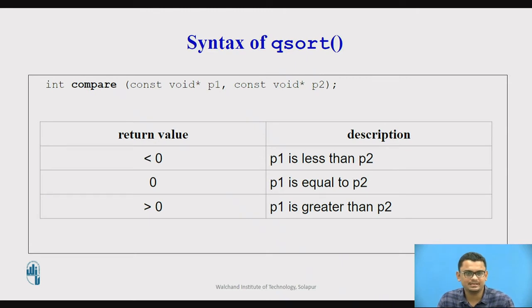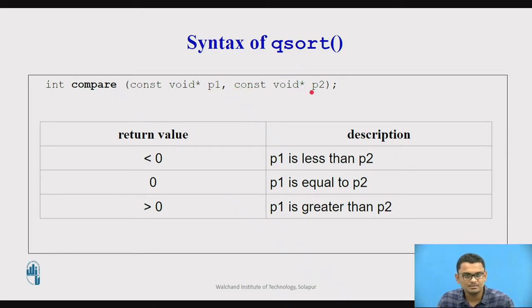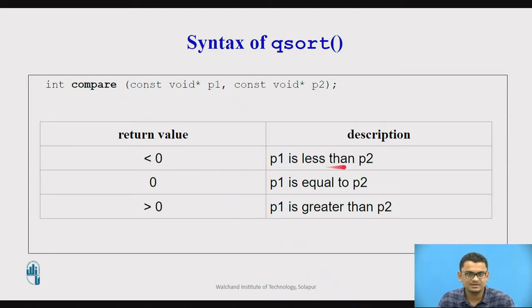Let us look at the fourth parameter in detail. It takes two pointers p1 and p2 pointing to two values in the array. When sorting, we compare two values according to a defined behavior. If p1 is less than p2 — say p1 is 5 and p2 is 10 — the difference gives a result less than zero, meaning p1 should be positioned to the left of p2.